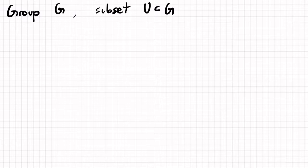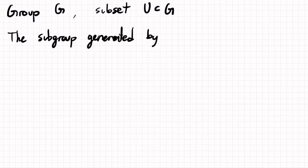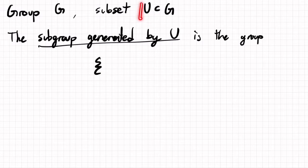This is called the subgroup generated by U, and it's the set of all possible products of elements from U.